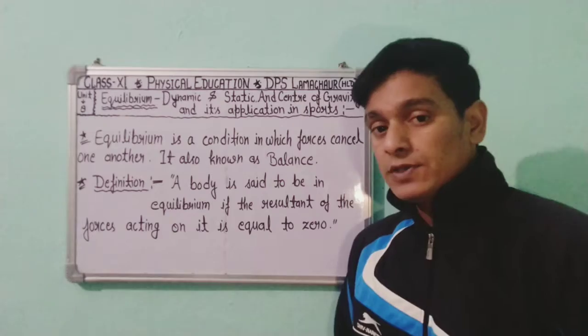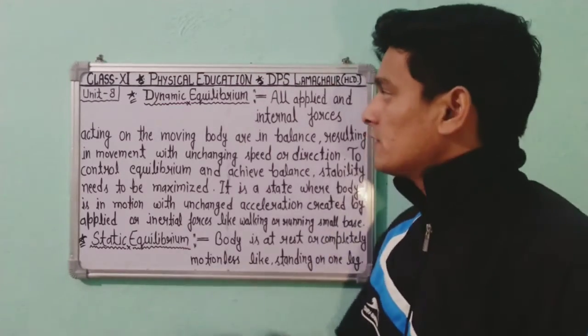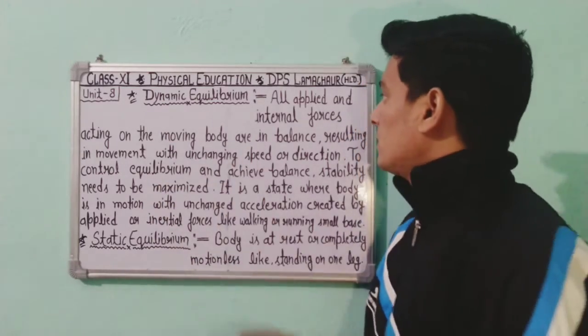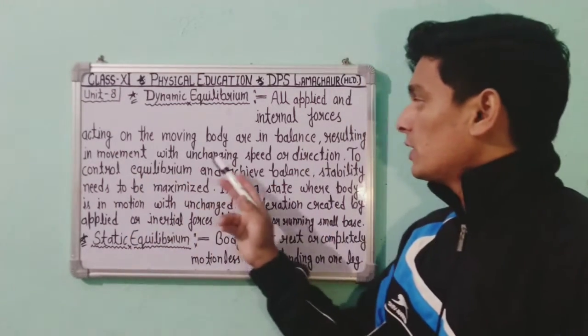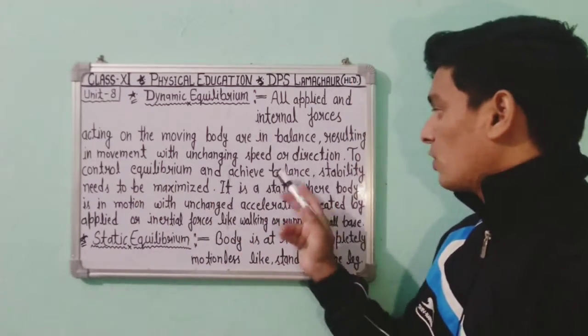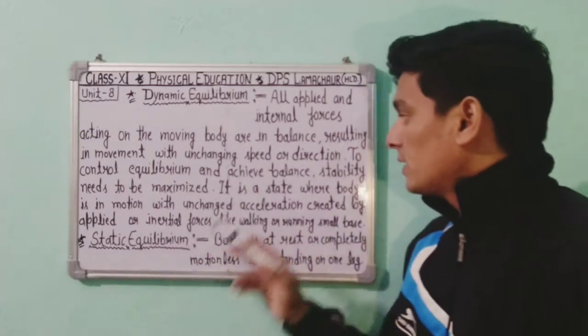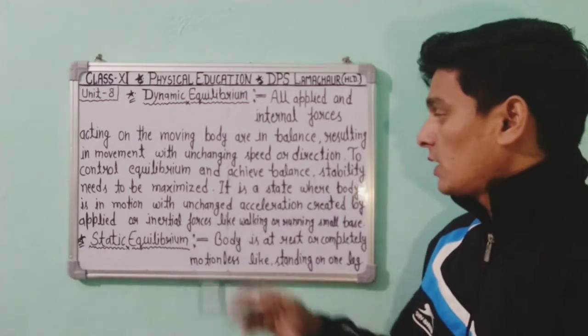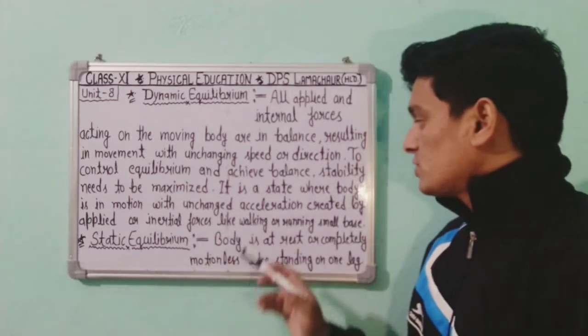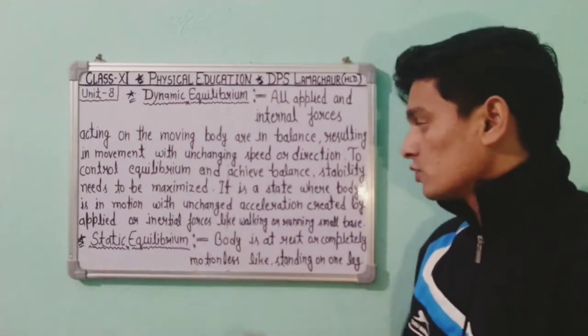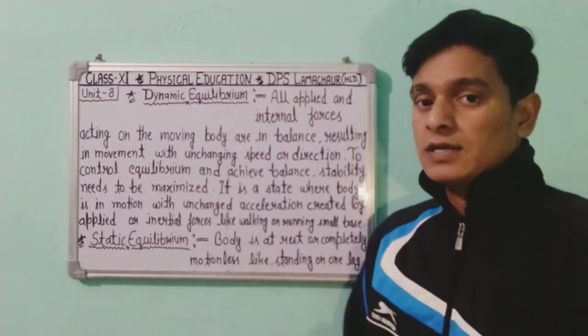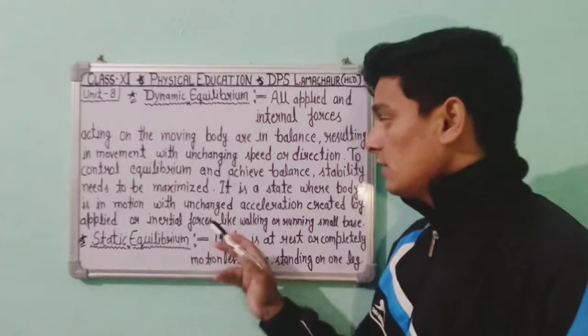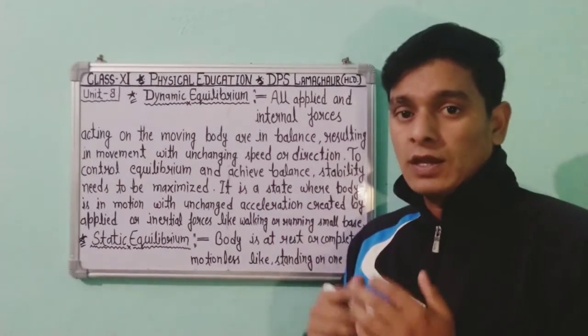Now let's know about Dynamic Equilibrium. All applied and internal forces acting on the moving body are in balance, resulting in movement with unchanging speed or direction. To control equilibrium and achieve balance, stability needs to be maximized. It is a state where the body is in motion with unchanged acceleration, created by applied or initial forces, like walking or running on a small base.